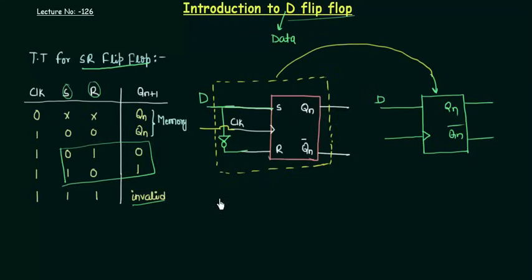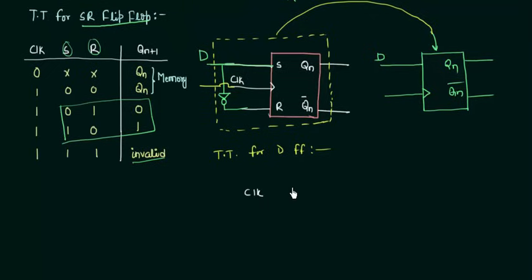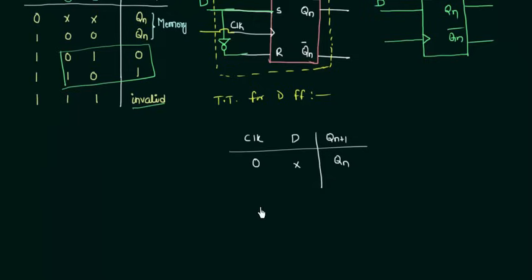It's time to move to the truth table for D flip-flop. A very simple truth table you will have. You will have your clock and a single input D and output QN plus 1. Now when clock is 0, it means this circuit won't take any input and the output will be what? The previous input. So QN is my output in this case.